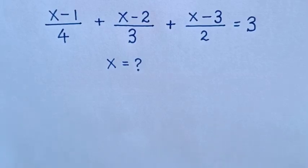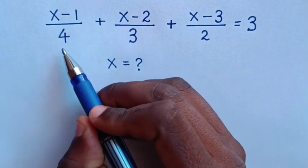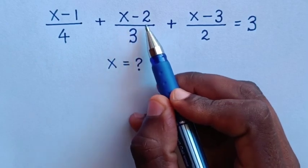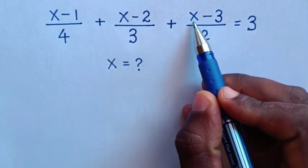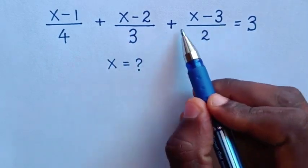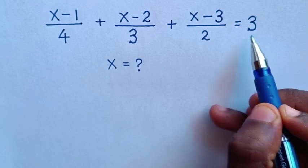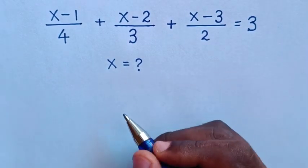Hello. How to solve x minus 1 over 4 plus x minus 2 over 3 plus x minus 3 over 2 is equal to 3, to find the value of x.